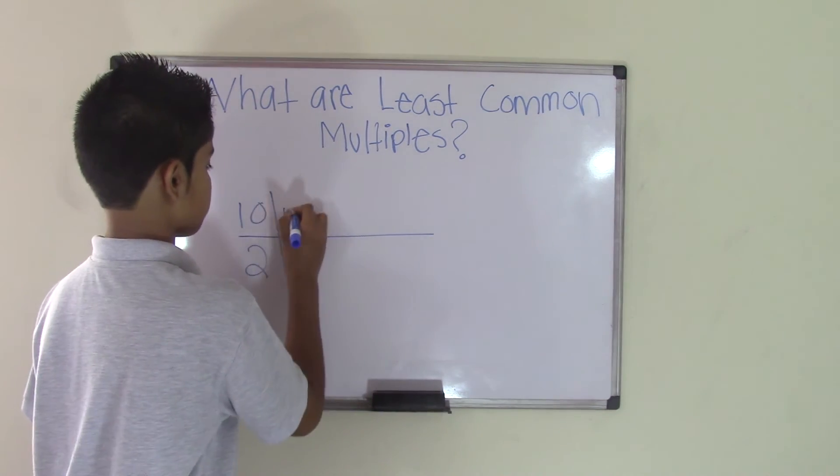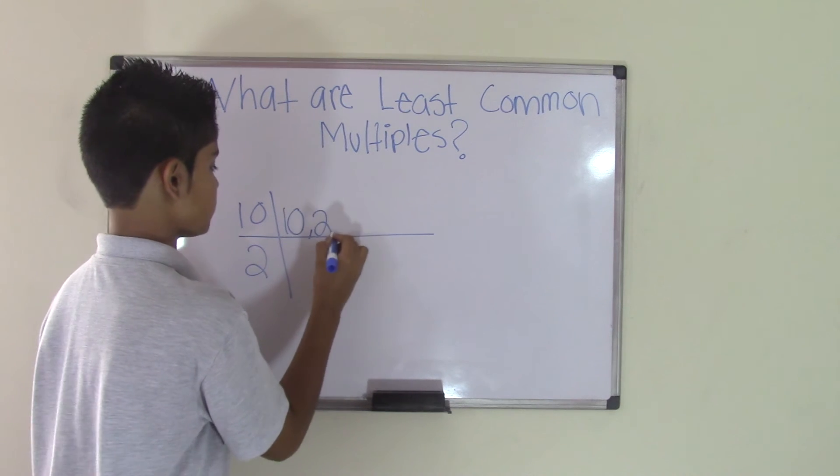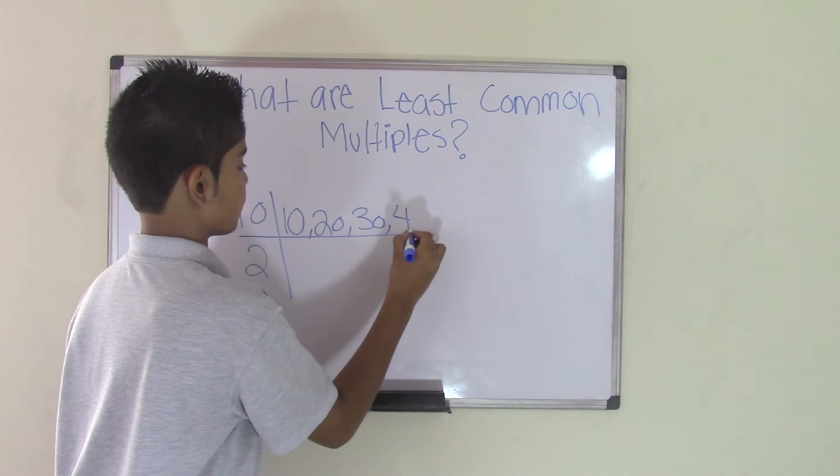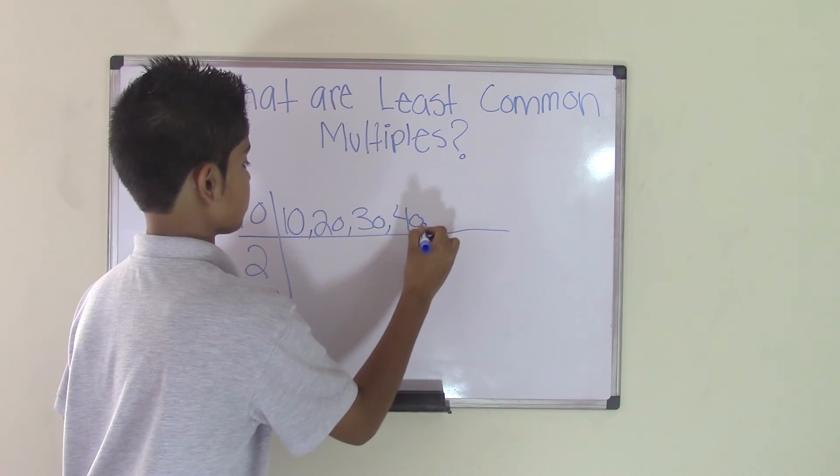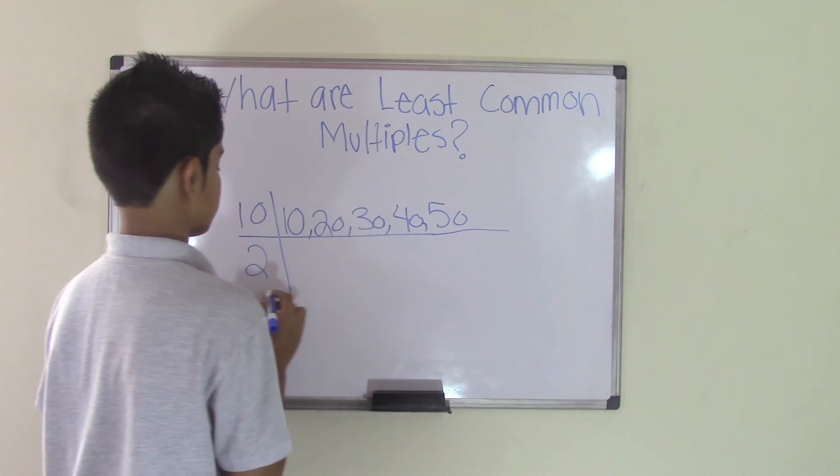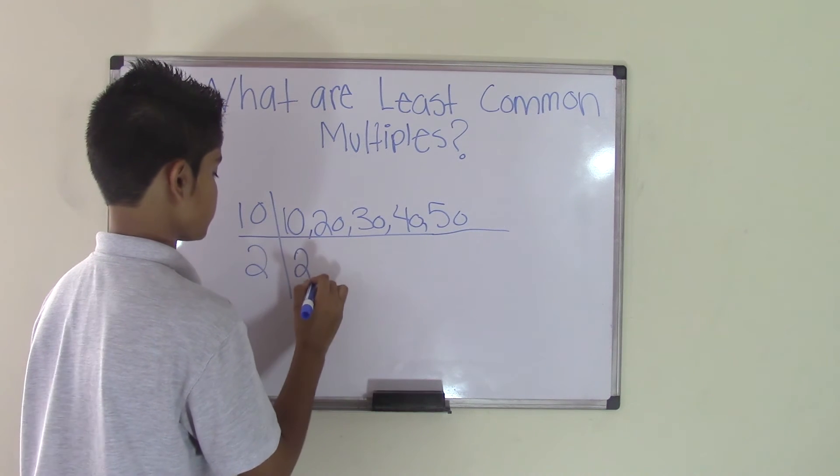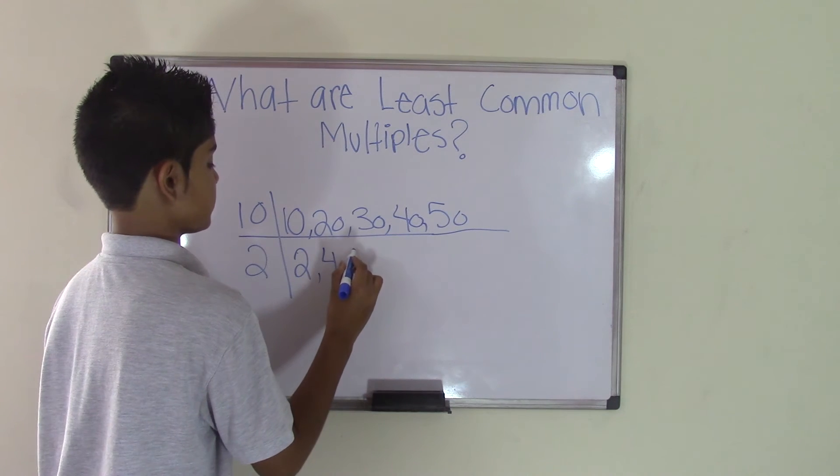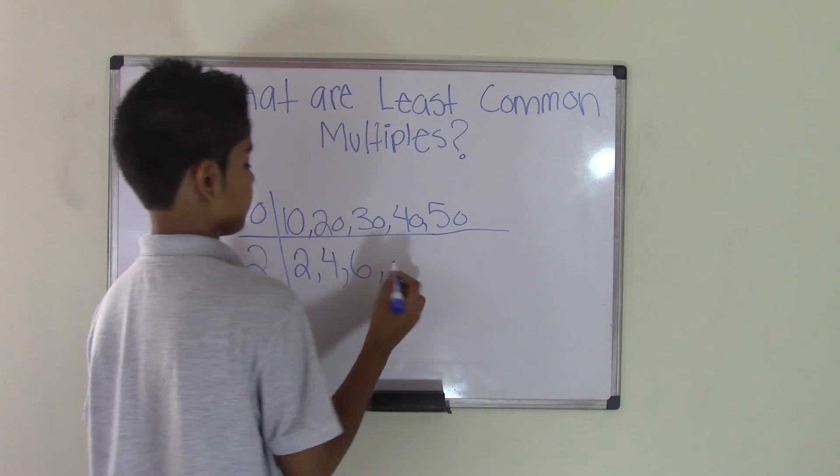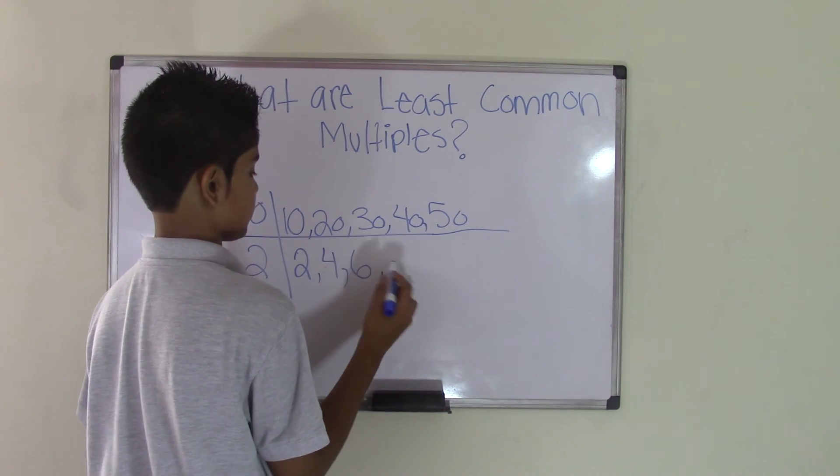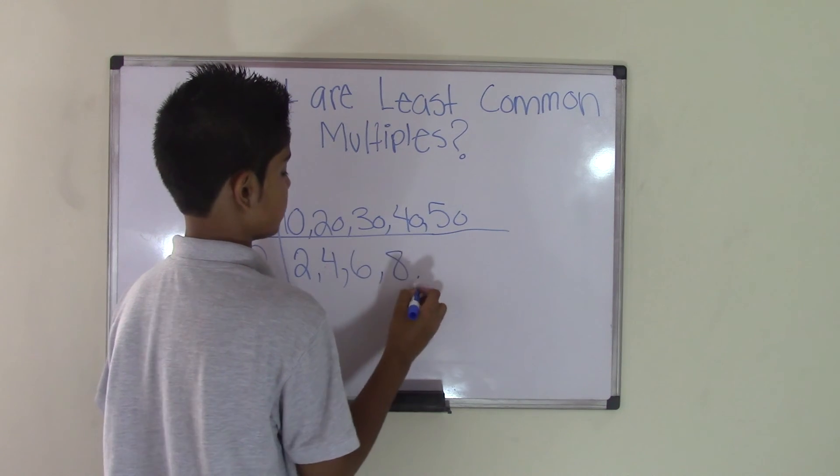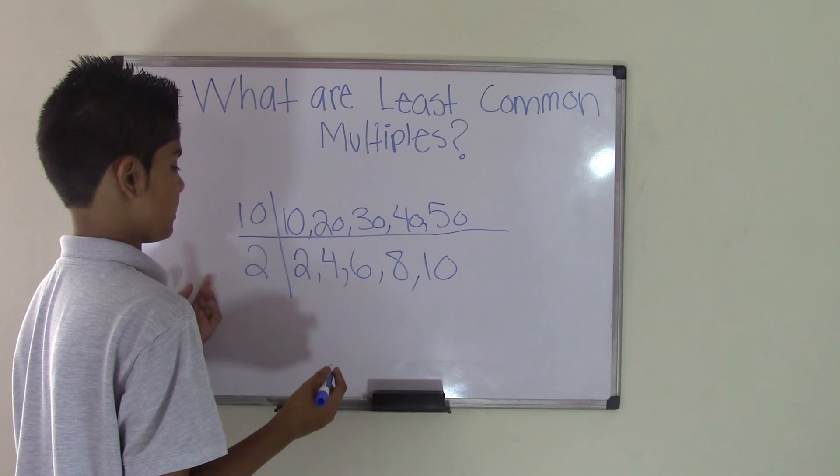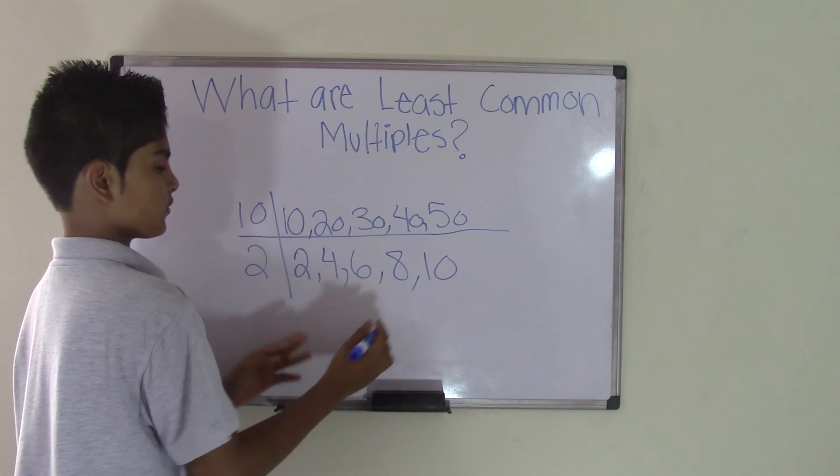10 times 1 is 10, 10 times 2 is 20, 10 times 3 is 30, 10 times 4 is 40, 10 times 5 is 50. 2 times 1 is 2, 2 times 2 is 4, 2 times 3 is 6, 2 times 4 is 8, 2 times 5 is 10. So each number and each of the multiples is up to 5.